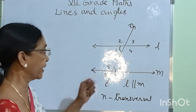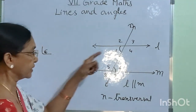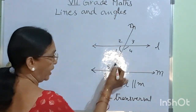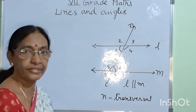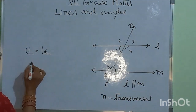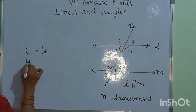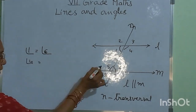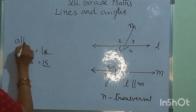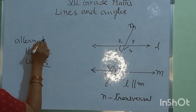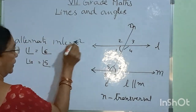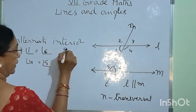Alternate interior angles are equal. This is one set, and angle 4 and angle 5 are another set of alternate interior angles. Therefore, angle 4 is equal to angle 5. Alternate interior angles.